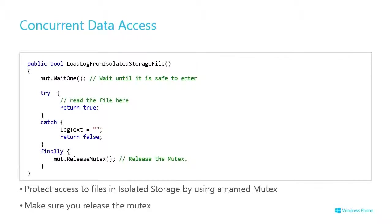But wait — what if they're both running at the same time? They can both run simultaneously, but we have a potential concurrency problem. Background agents are actually scheduled and run by the OS through a scheduled agent service. If you have a number of apps with registered agents, it batches them up and runs things efficiently. Your background agent runs as a separate process from your foreground app, so they could be running at the same time. You need to use a named mutex — an old-school synchronization primitive — to ensure you're the only one accessing a file at the same time.